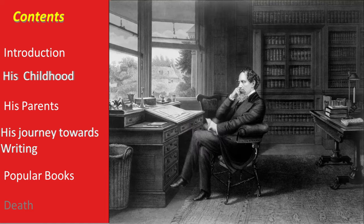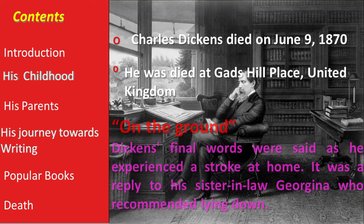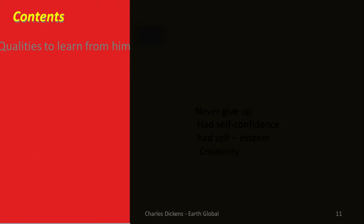Finally, we have arrived at his death. The great writer Charles Dickens died on June 9th, 1870, at Gads Hill Place in the United Kingdom. Those were Dickens' final words, said as he experienced a stroke at home. It was a reply to his sister Georgina, who had recommended Lindal.